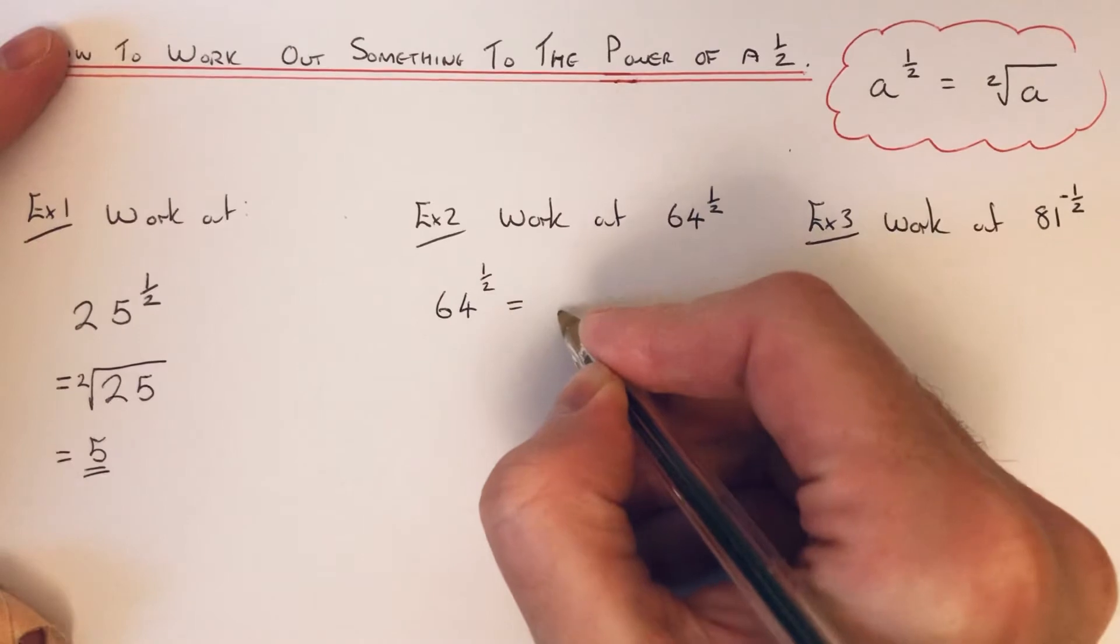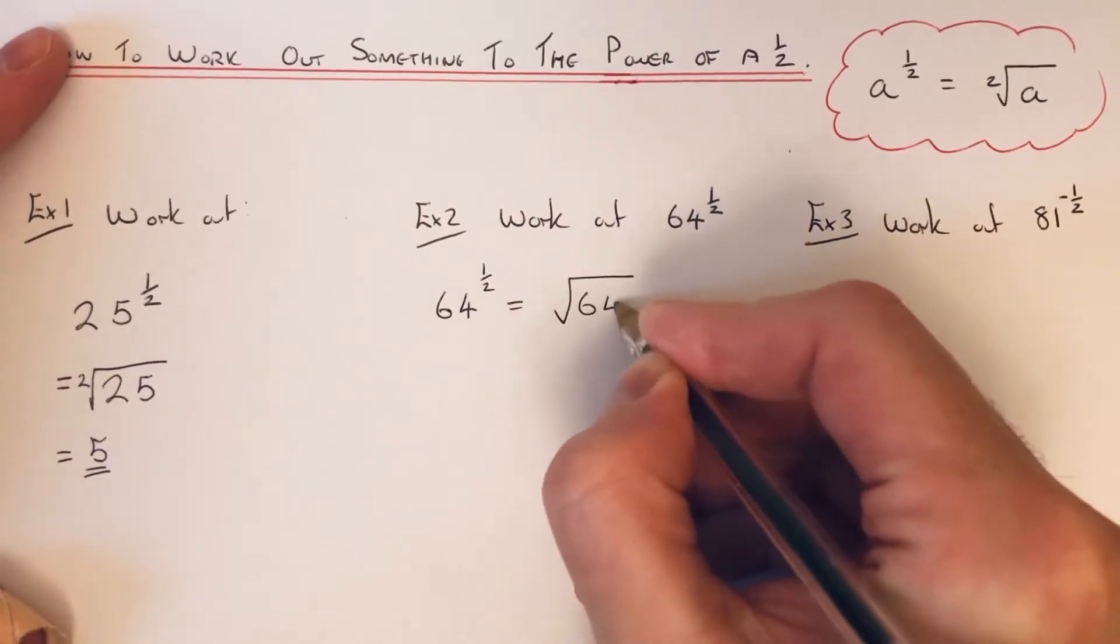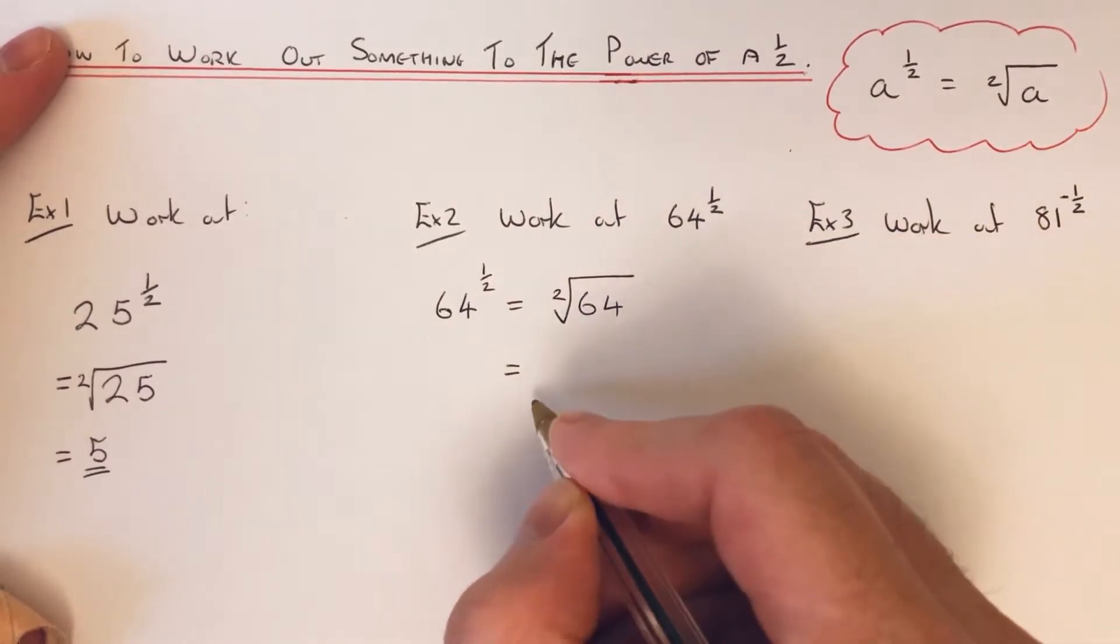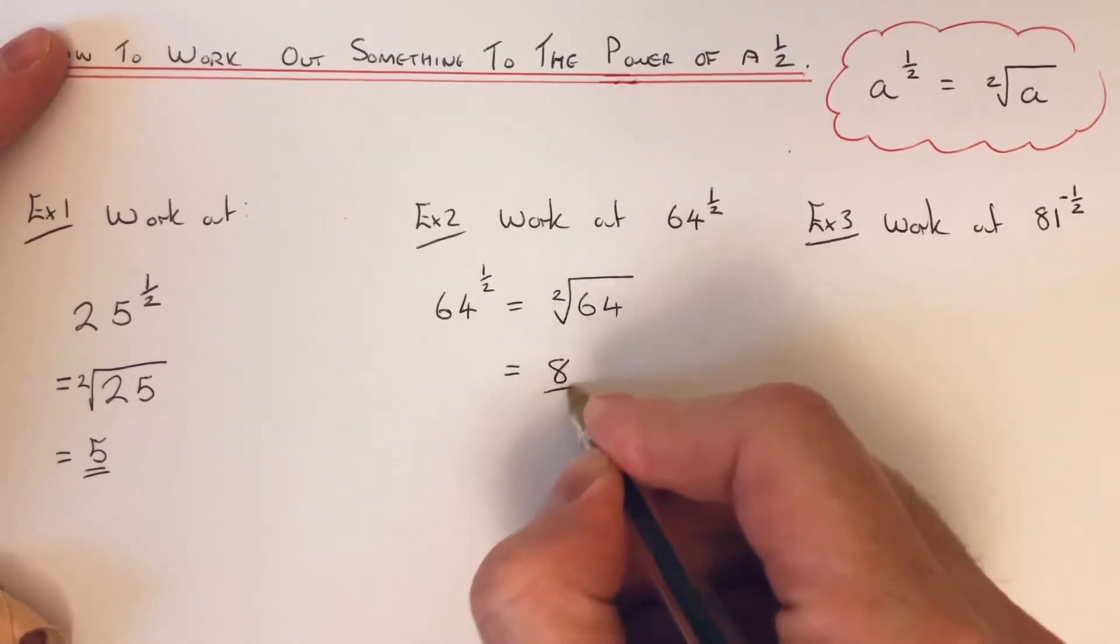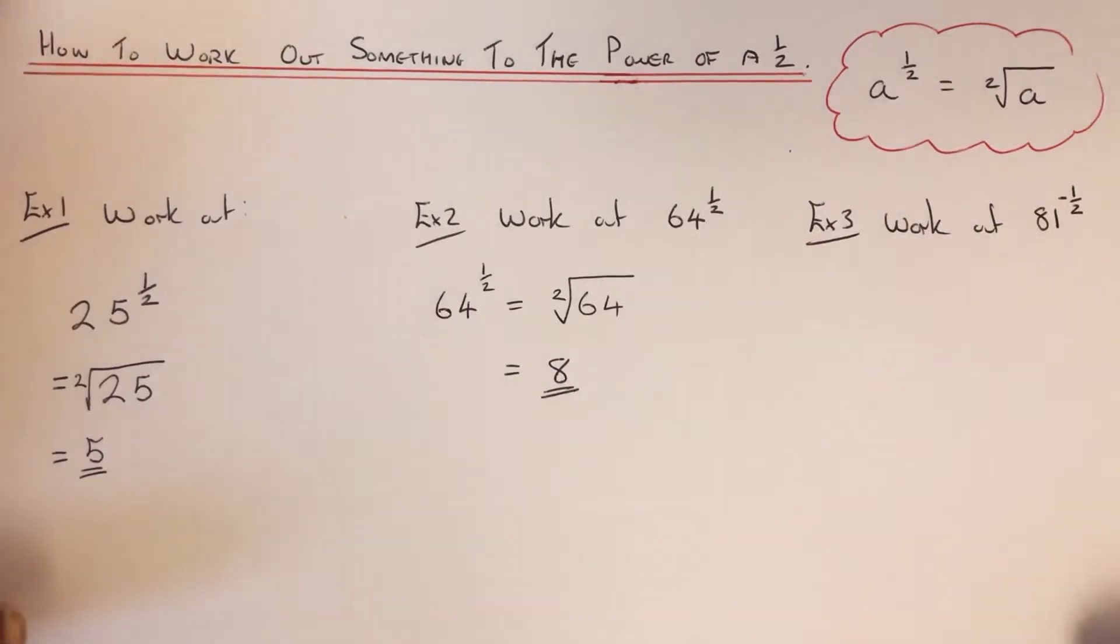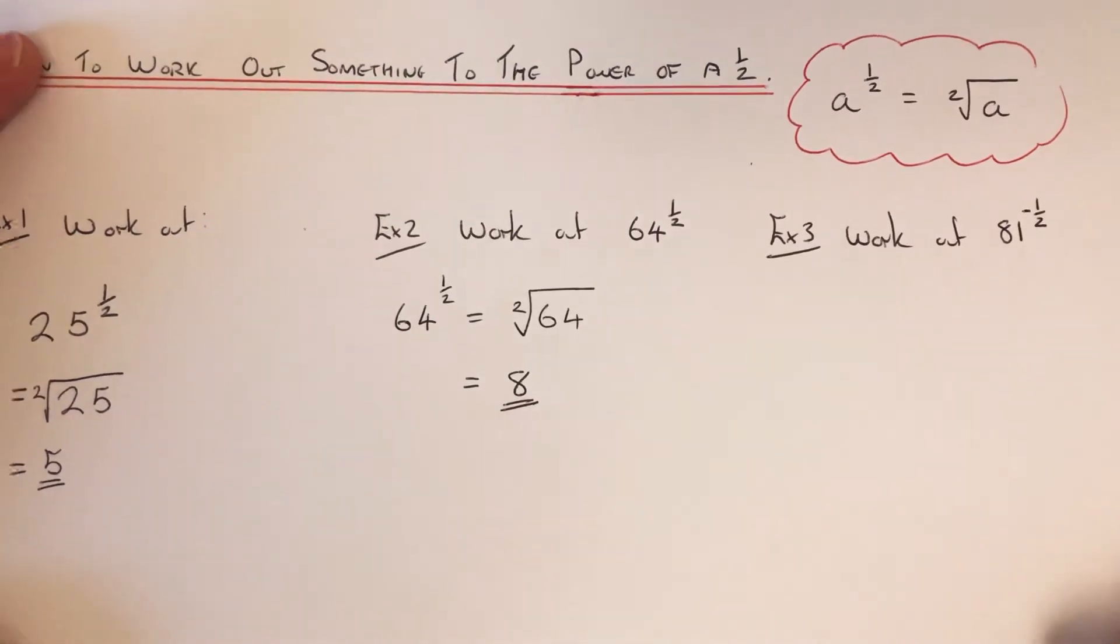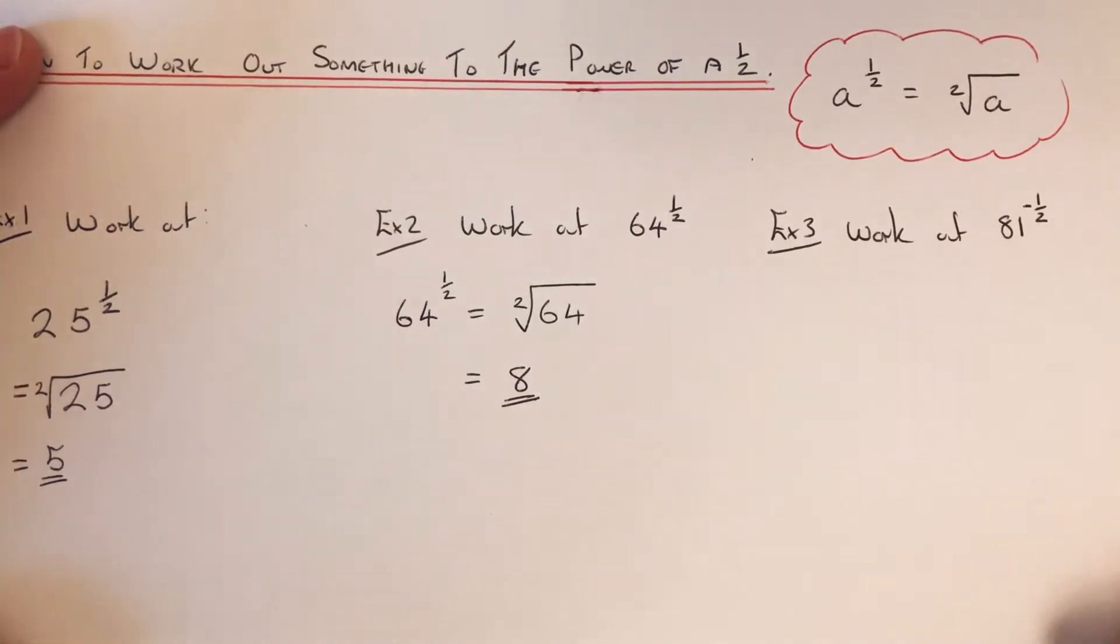Again, the power of a half just means we need to take the square root of the number. So the square root of 64 is 8 because 8 times 8 is 64.